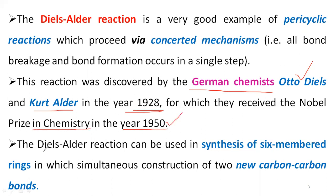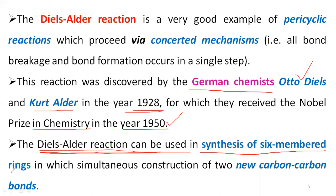The main important application of the Diels-Alder reaction is the synthesis of six-membered rings. By using this reaction we can produce six-membered rings in which the simultaneous construction of two new carbon-carbon bonds occurs during the ring formation.